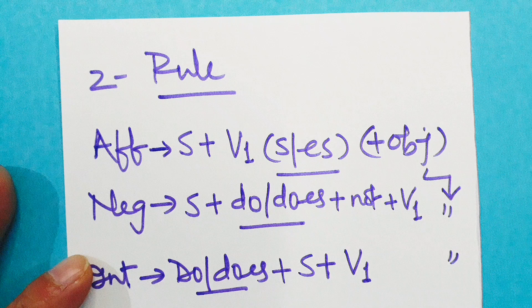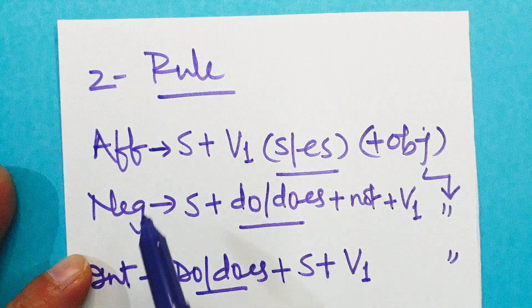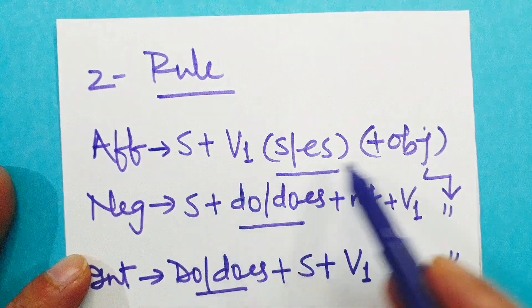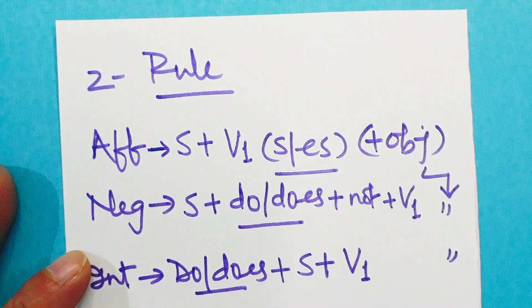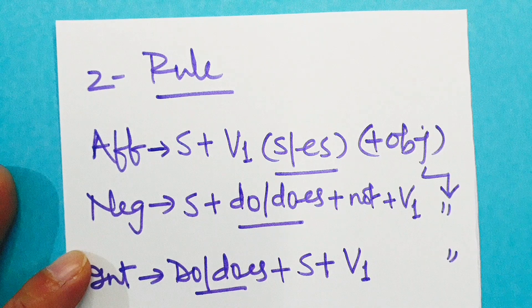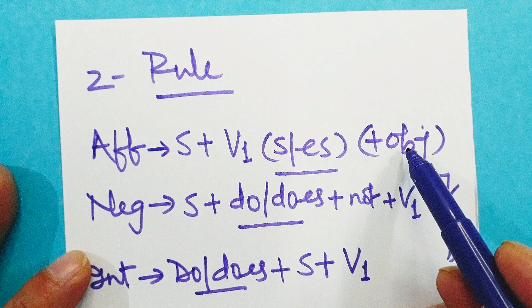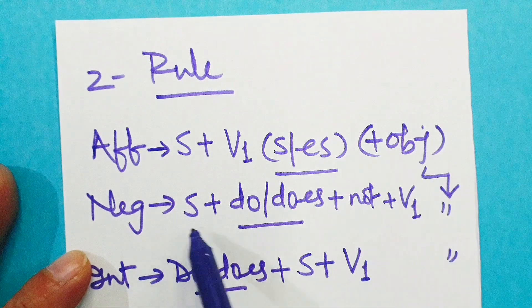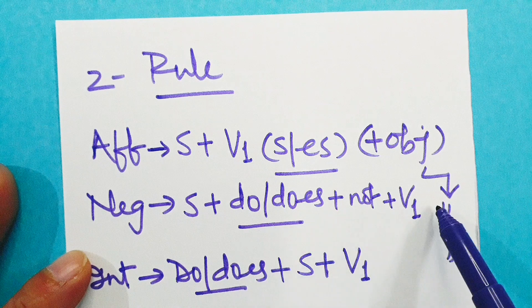Now sentence type two. We are going to take they as a subject. They is third person plural. Affirmative: subject plus V1 plus object. We won't take S or ES here because subject is not third person singular. They is third person plural. They write a letter.